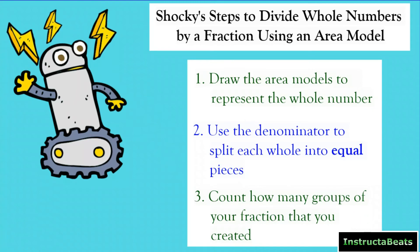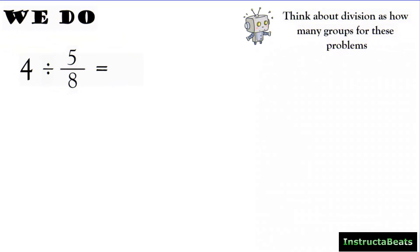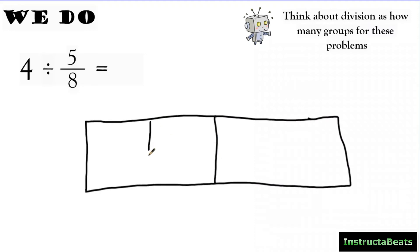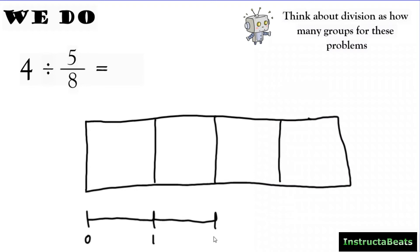Let's do a 'we do' problem together. There are guided notes in the description of this video you can print or fill out on Google Docs. For this one I'm going to use a fraction bar model, drawing the four wholes connected to each other. I'll put a little number line underneath — zero, one, two, three, four. My denominator is eight, so I want to split each whole into eight pieces.